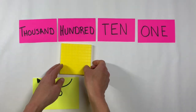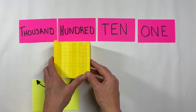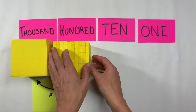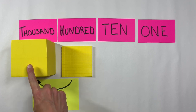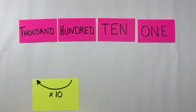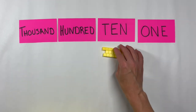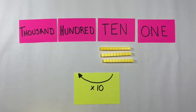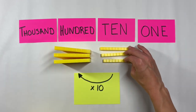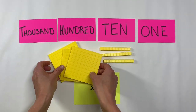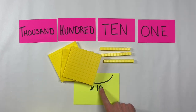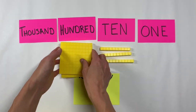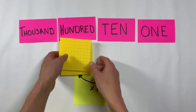Starting with a one hundred and multiplying by ten gives us ten groups of one hundred, turning a hundreds flat into a thousands cube. Over time we want students to realize that multiplying by ten results in a place value shift. If we have three tens rods and multiply by ten, each becomes a hundreds flat, so a three in the tens place becomes a three in the hundreds place. A multiplication by ten is a shift in place value.